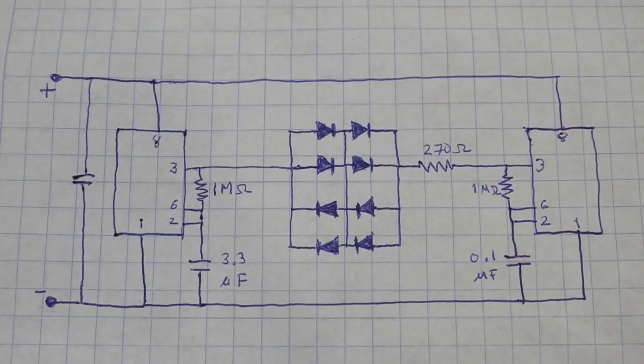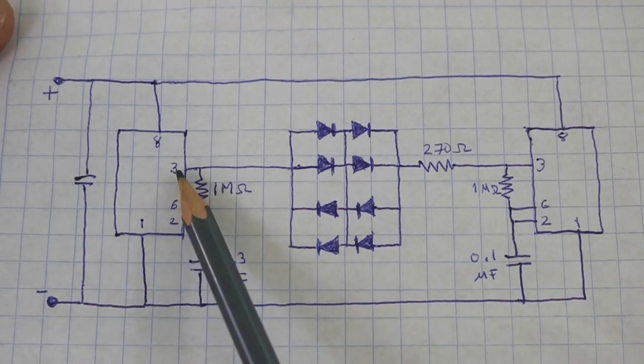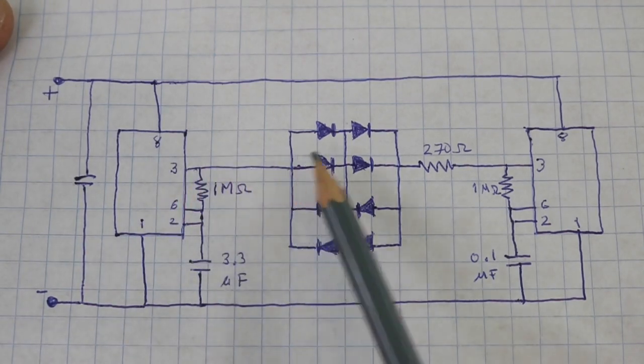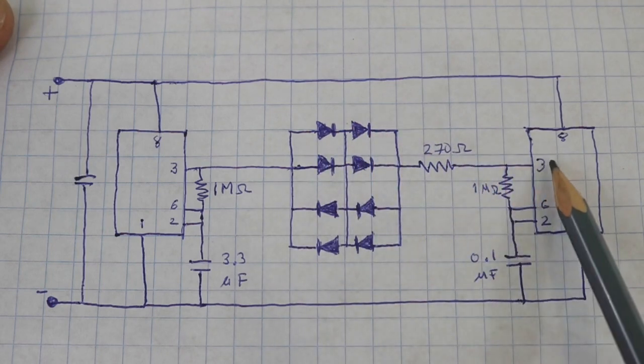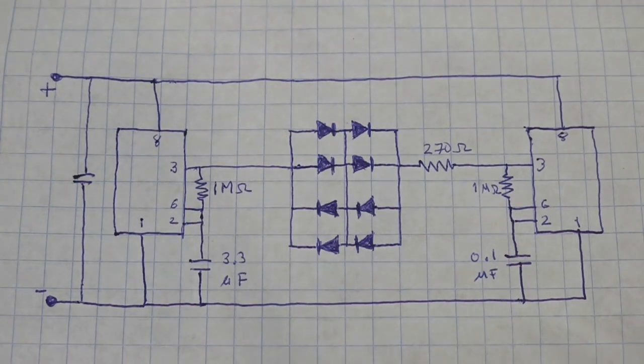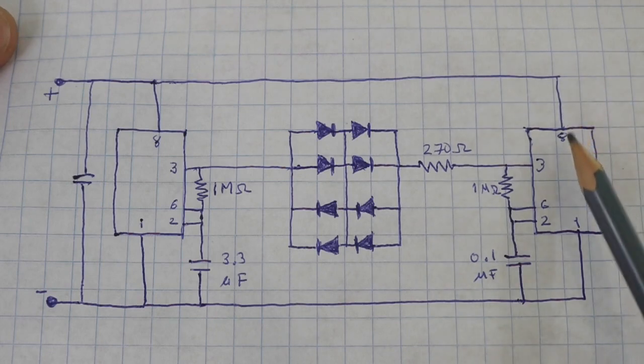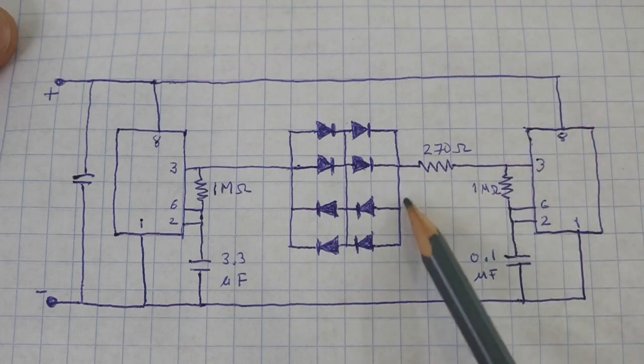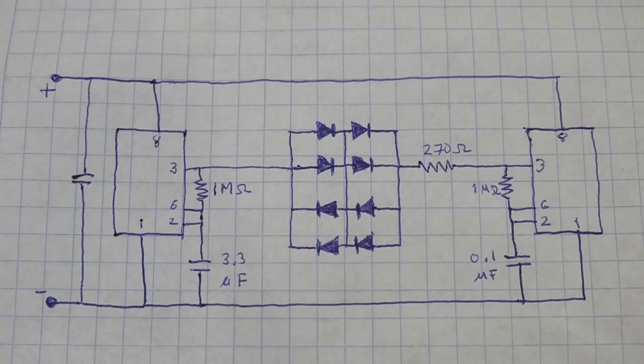It's a train of pulses, square pulses. Therefore when this is on, the current passes through the four diodes here and then to the other timer, and when this is off the current goes in the opposite way through the other set of LEDs.